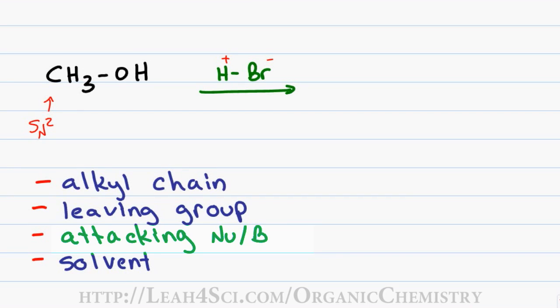Now bromide is a terrible base but we've already ruled out elimination so that's not a concern. Br- as a large halogen makes a good nucleophile so we can have an SN2 reaction. We're not given a solvent so we won't worry about it but now let's go back to the leaving group.